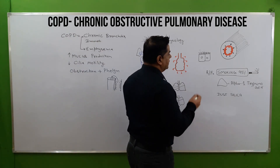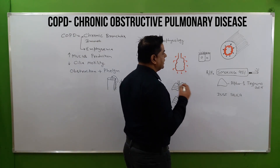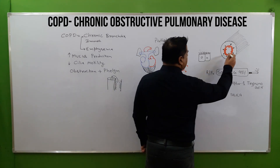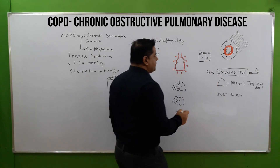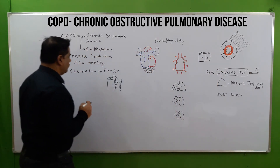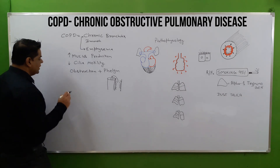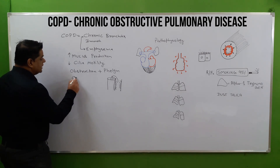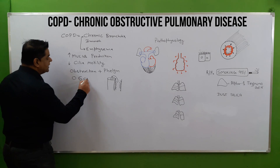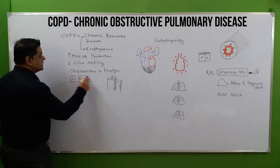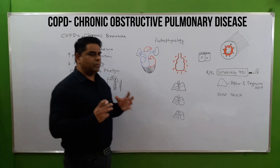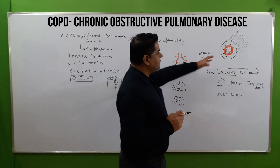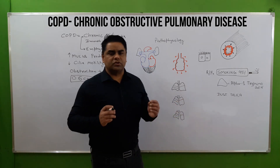Our goblet cells, due to consistent irritation, are producing excessive mucus inside the lumen. The diameter of the bronchioles or airways is merely only 0.6 centimeters — a very small diameter — which is why they get easily obstructed.